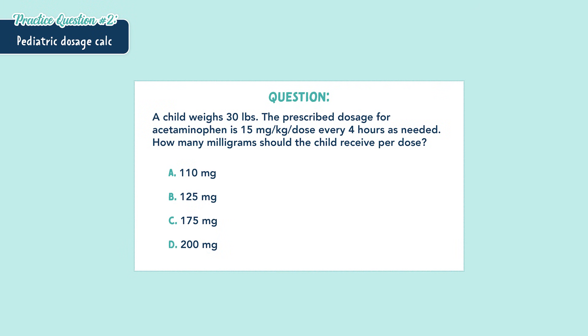Hopefully it's not too bad when you break it apart, but let's do another practice question. This time I'm going to throw one more thing in there to make it a little harder. A child weighs 30 pounds. The prescribed dosage for acetaminophen is 15 milligrams per kilogram per dose every four hours as needed. How many milligrams should the child receive per dose?